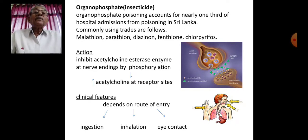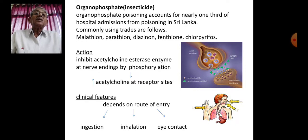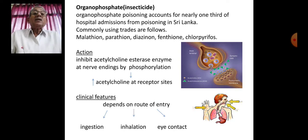How does organophosphate affect the body? Its action is inhibiting the acetylcholinesterase enzyme at nerve endings by phosphorylation, resulting in increased acetylcholine at receptor sites.